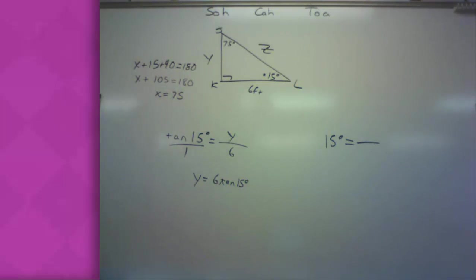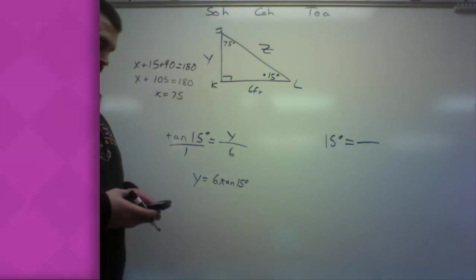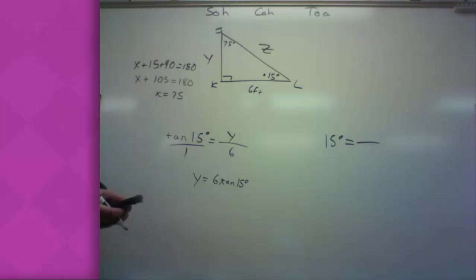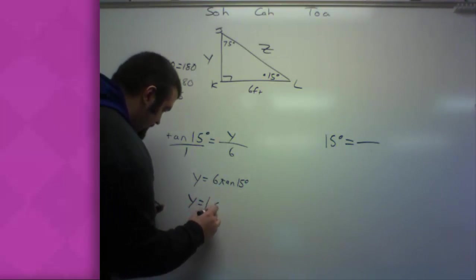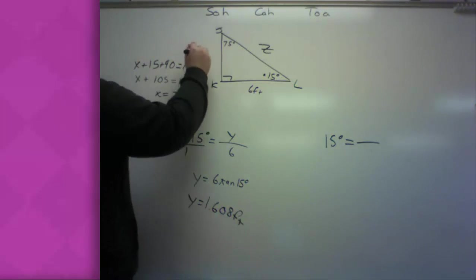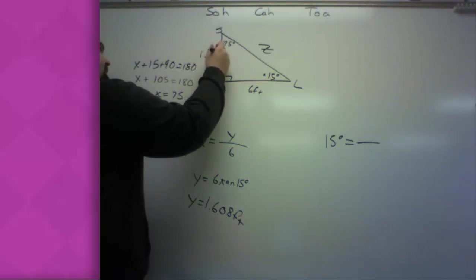It's a proportion, remember. Cross multiply. Y equals 6 times tangent of 15 degrees. If you know what you're doing here, plug this in. However, in this case, I'm not exactly sure off the top of my head. So let's plug it in. 6 tangent of 15. Y ends up being 1.608 feet.